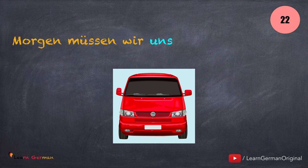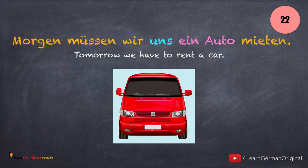And here is the next sentence: Morgen müssen wir uns ein Auto mieten. Here you mostly use the verb without the Dativobjekt.